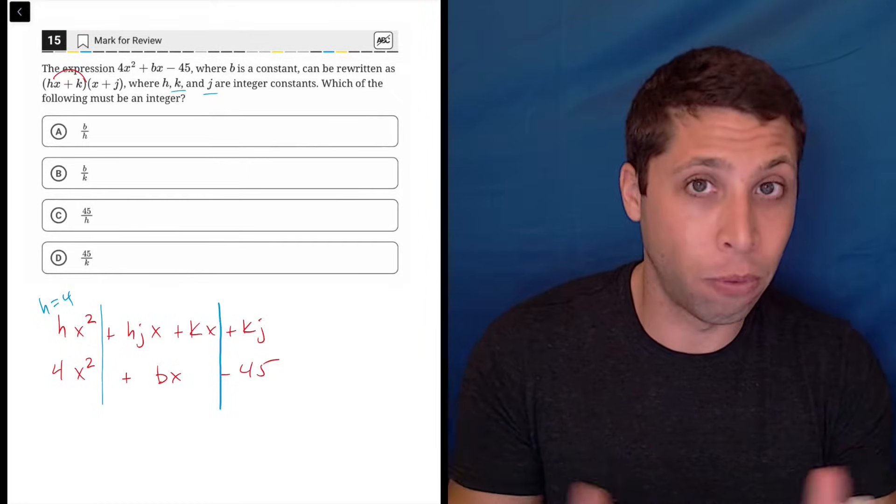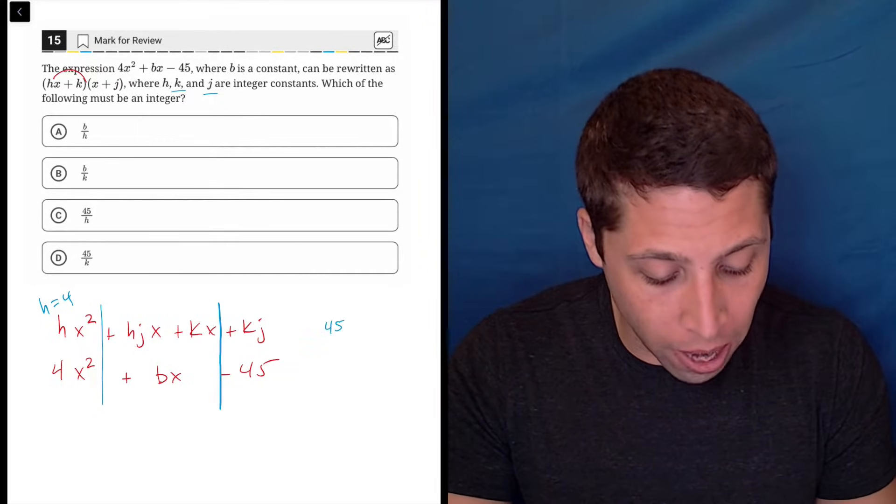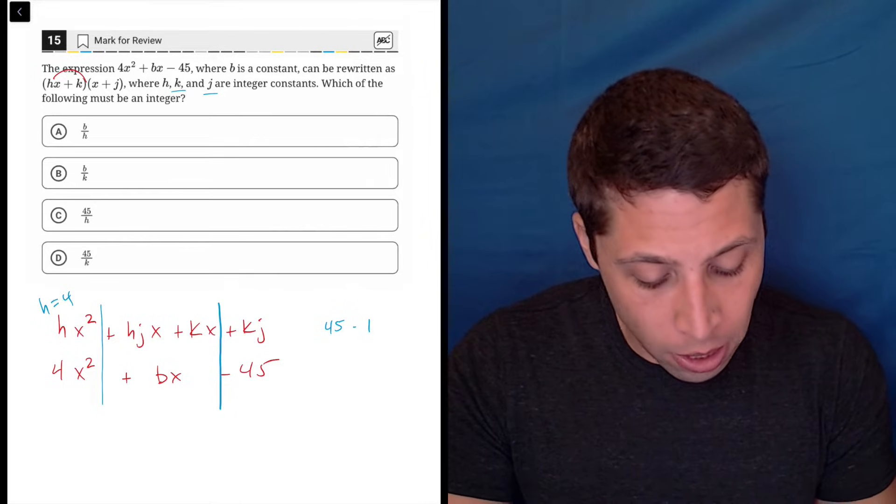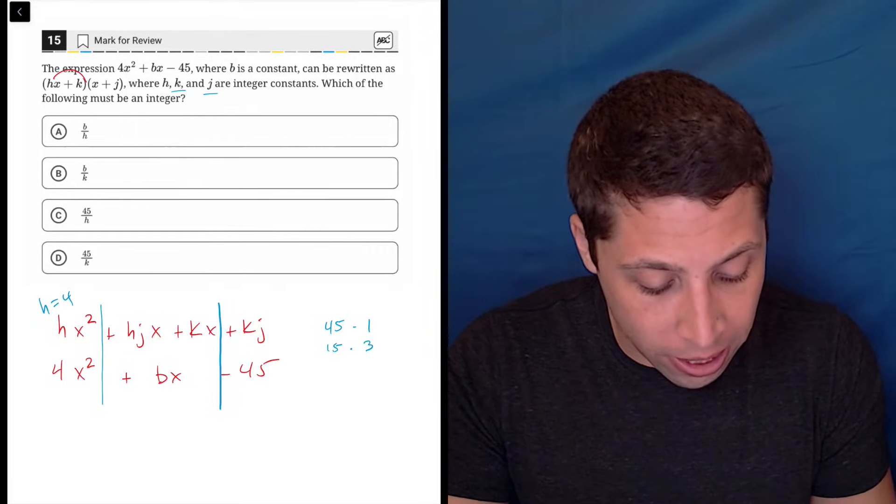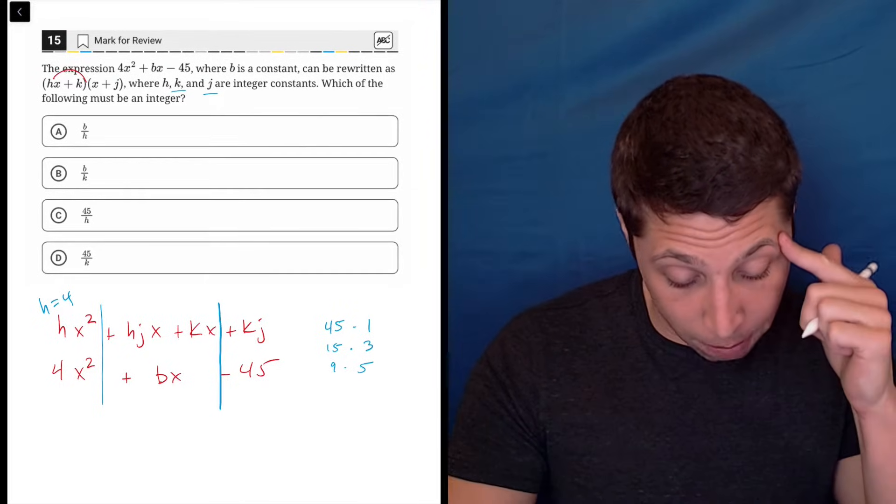What are the factors of 45? What's going to multiply to give me 45? Well, it could be 45 and 1. It could be 15 and 3. It could be 9 and 5. I think that's all the combinations.